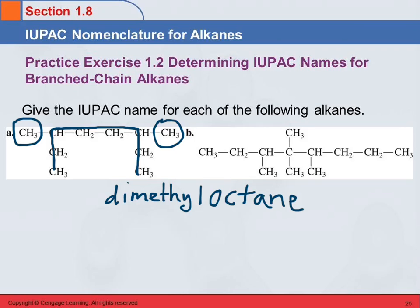Numbering the octane chain left to right: 1, 2, 3, 4, 5, 6, 7, 8. The first methyl group is on carbon 3, the second on carbon 6. The 3 and 6 are separated by a comma, and the 6 is separated from the letter D with a hyphen: 3,6-dimethyloctane. Numbered the other way gives 3 and 6 again — same result. But sometimes it does matter, so always go for the lowest numbers.